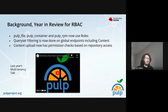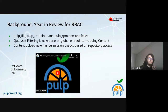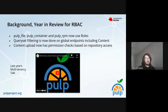Plugins are now starting to add RBAC support. PULP file, PULP container, and PULP RPM as presented in the last presentation now use roles. The second problem was that the roles need to basically isolate all of the files. We have a lot of endpoints with a lot of different objects, and if anybody can see these objects then you have a problem because now they're no longer isolated.